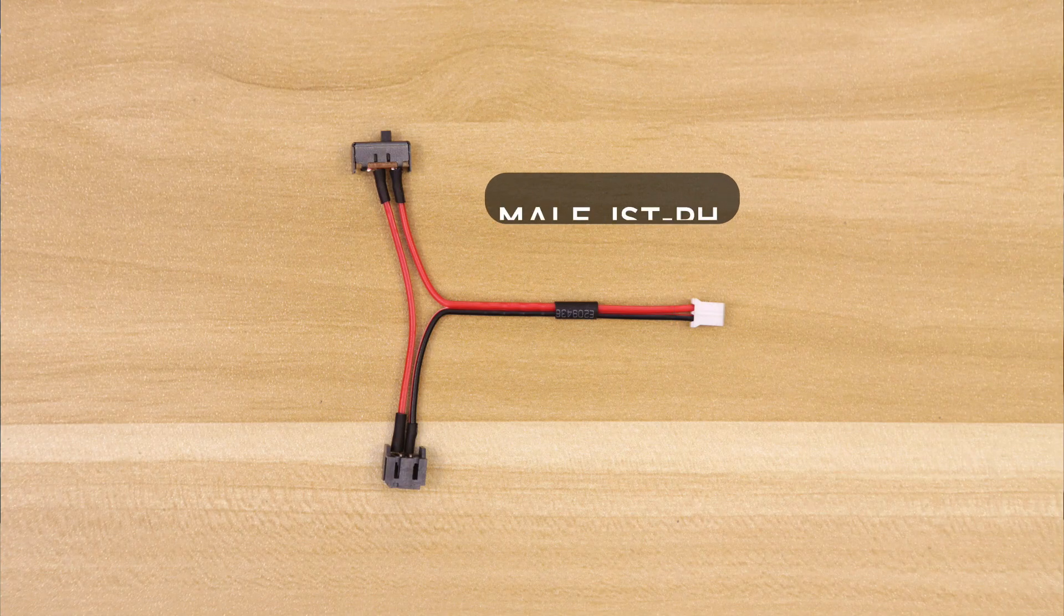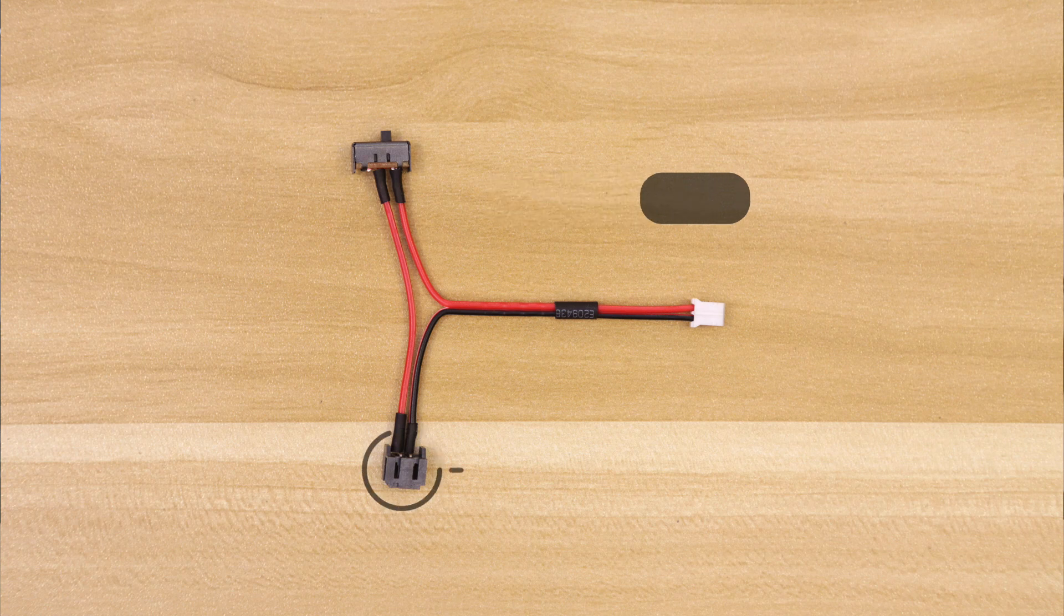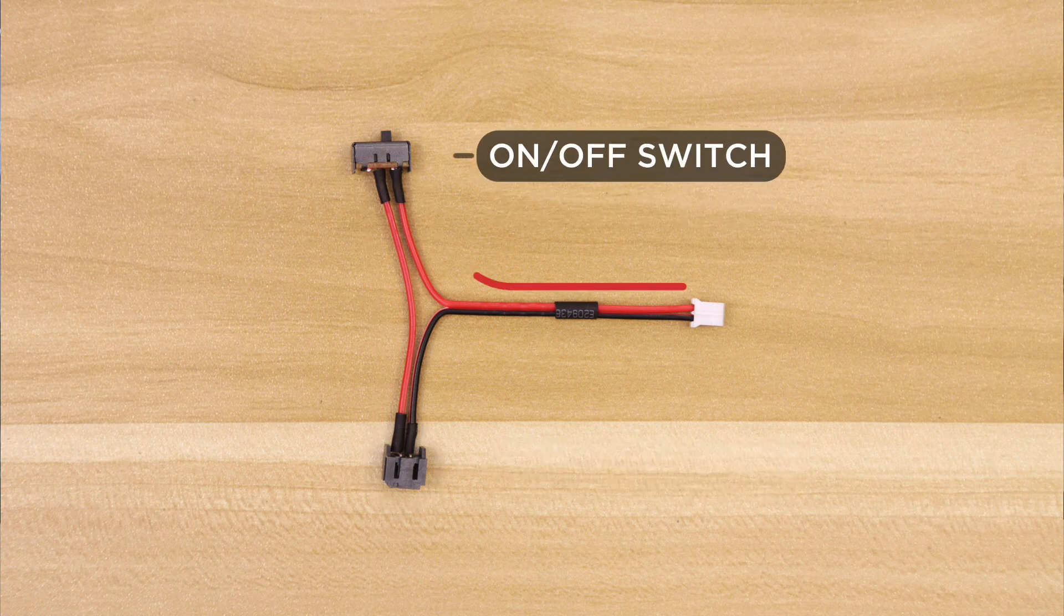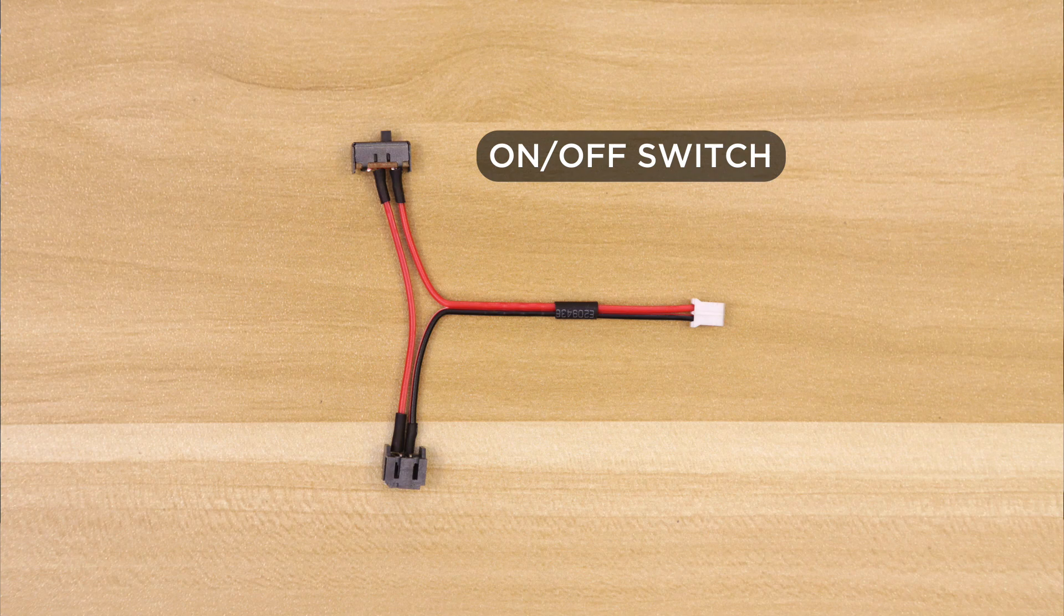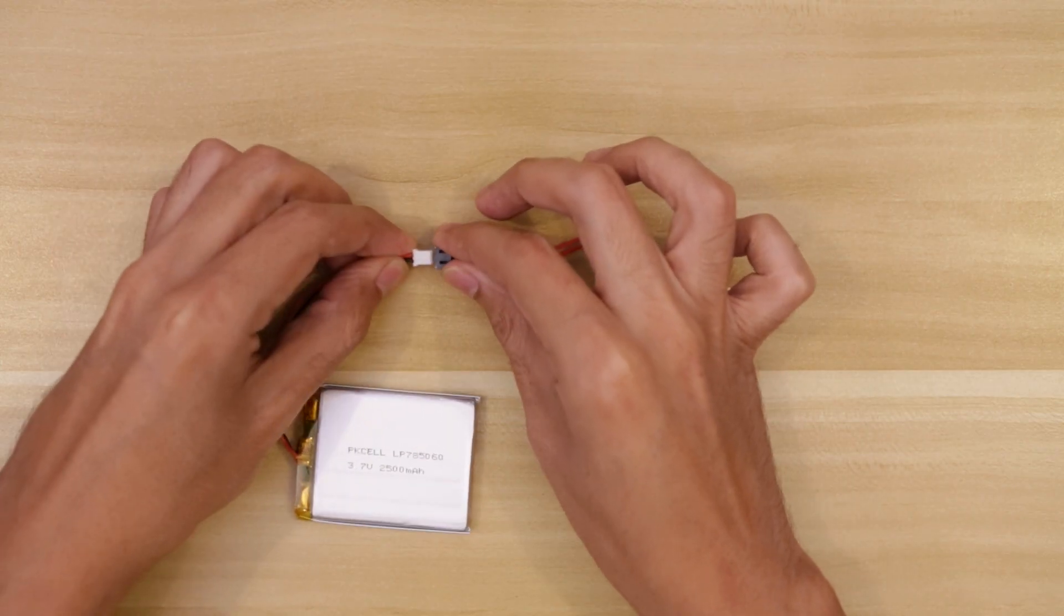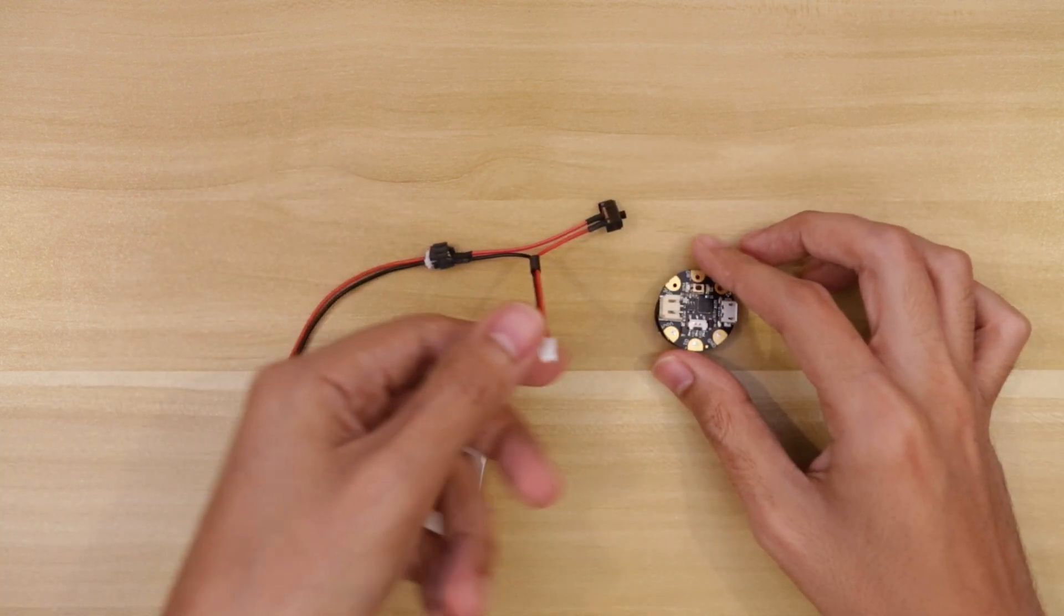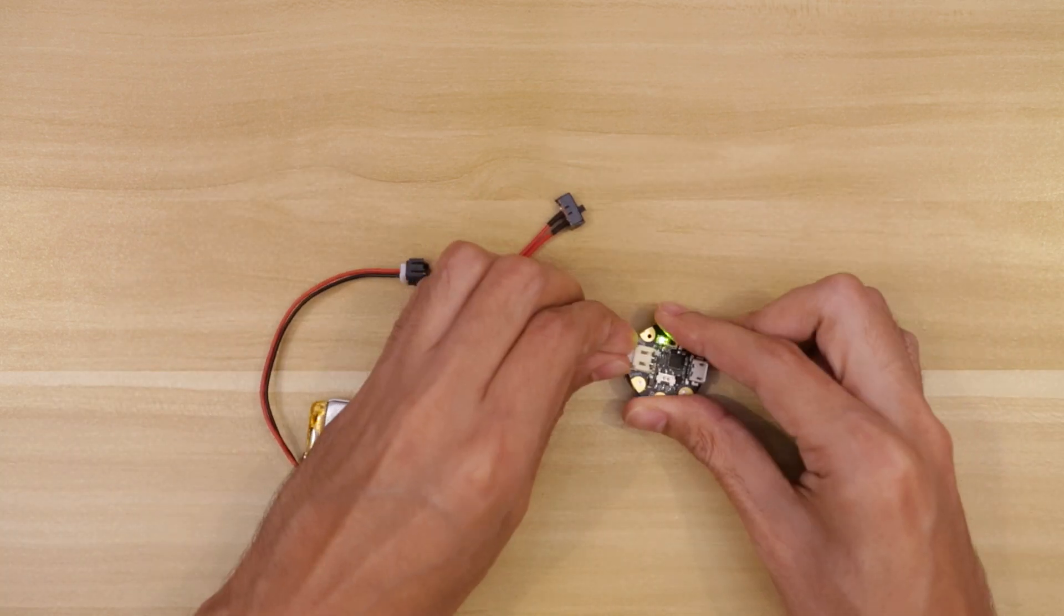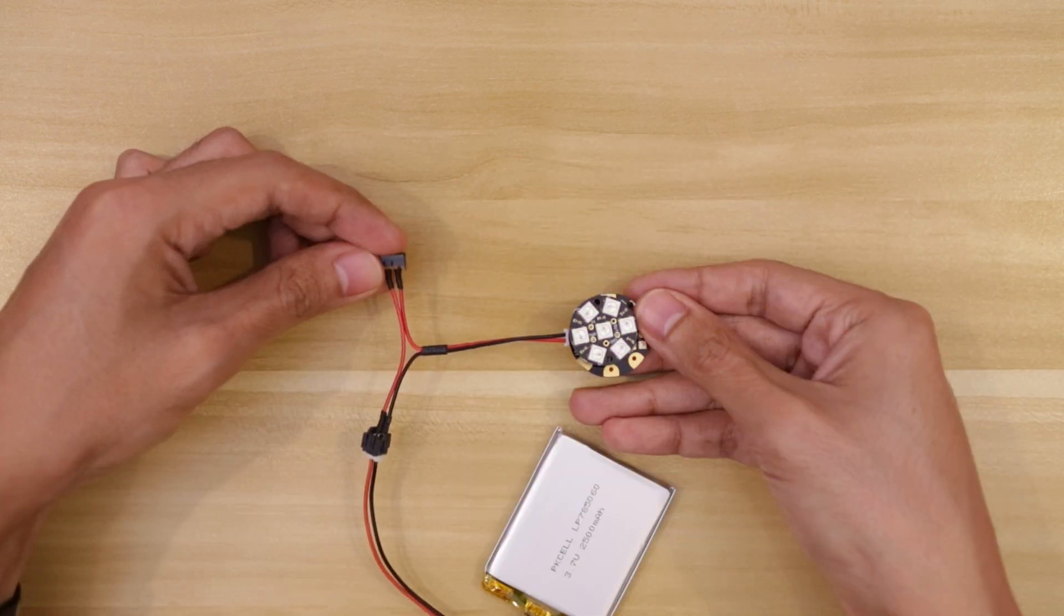This has a male JST connector on one end and on the other is a female connector. In between these two, wired in line with the voltage, is a slide switch. So you can connect this in between your battery and your board. All we need to do is plug in the battery to the female connector and then plug in the male connector to the board. So then we can turn the circuit on and off.